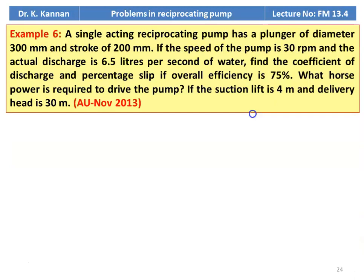Example number 6: A single acting reciprocating pump has a plunger of diameter 300 millimeter and a stroke of 200 millimeter. If the speed of the pump is 30 RPM and the actual discharge is 6.5 liters per second of water, find the coefficient of discharge, percentage of slip, if overall efficiency is 75%, the water horsepower required to drive the pump, if the suction lift is 4 meter and delivery head is 30 meter. This is from the November 2013 question paper.